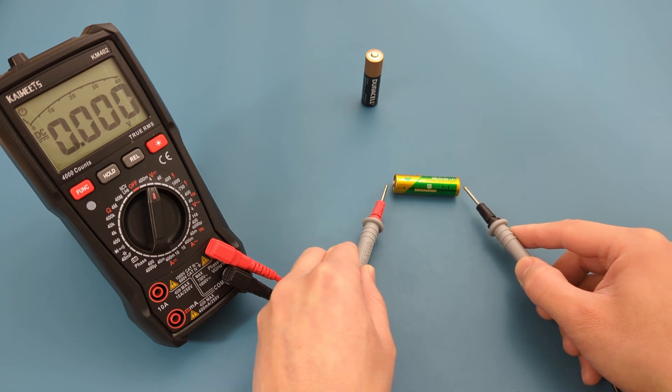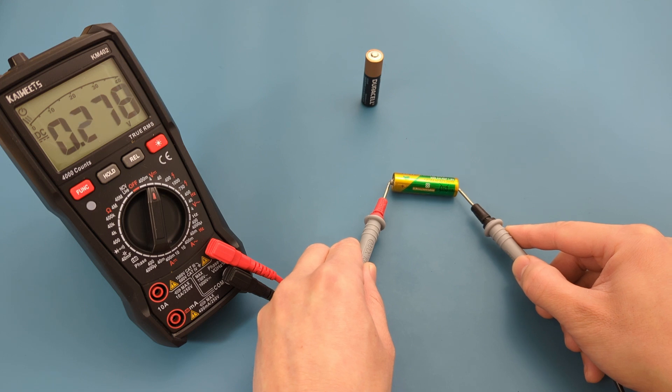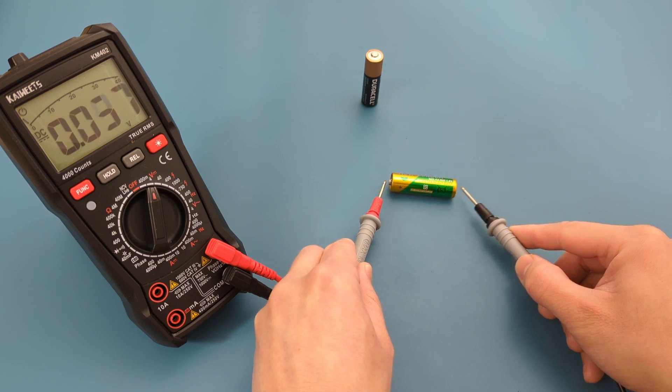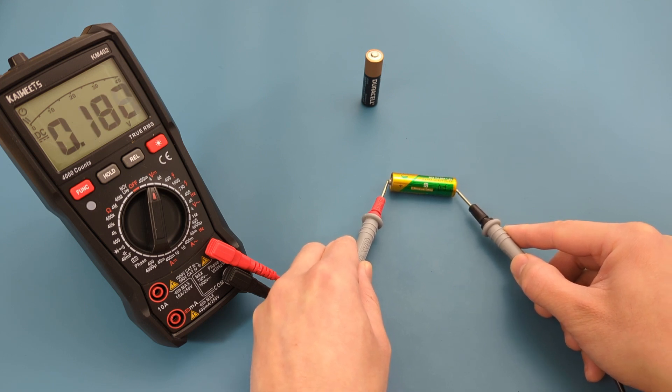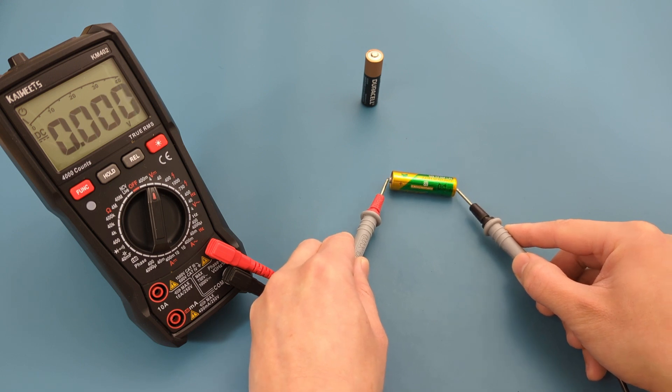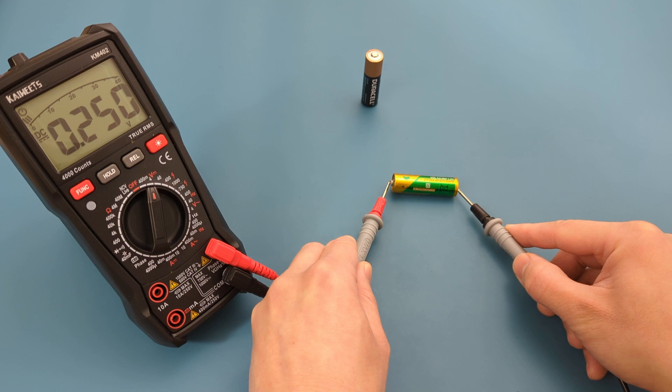I hope this video has demonstrated how to test a AA battery without a multimeter. For a more detailed guide on testing a AA battery with a multimeter, make sure to watch our other video. Remember to like, share, and subscribe to this channel. I look forward to seeing you in the next video.